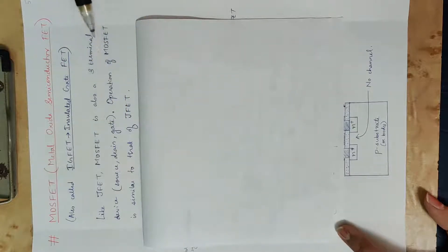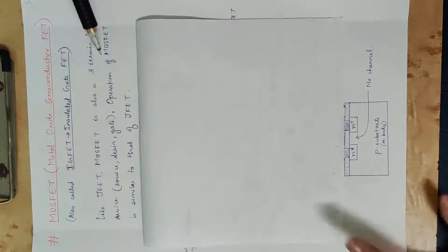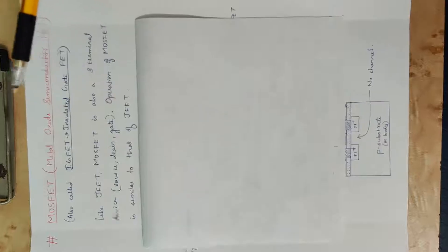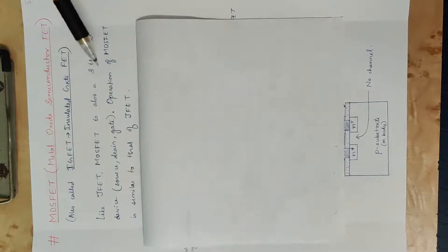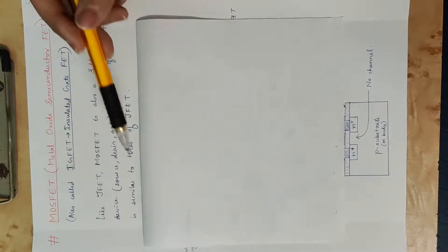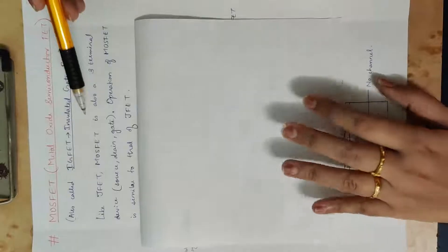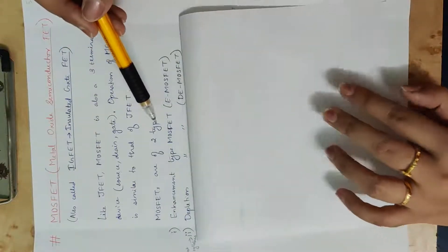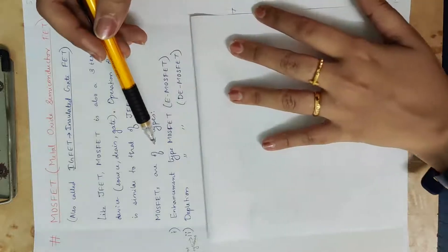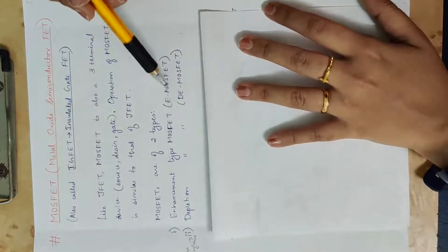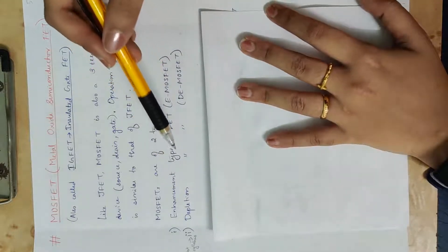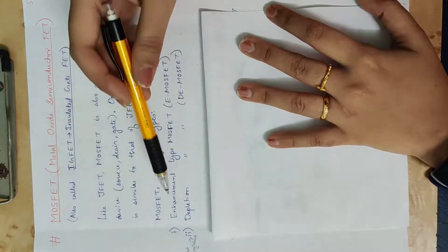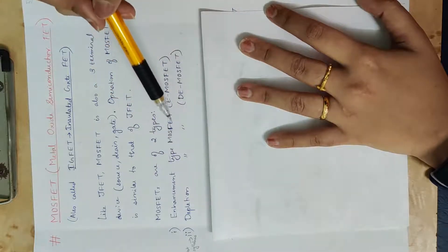MOSFET is a 3-terminal device and its operation is similar to that of JFET. MOSFETs are of two types: Enhancement Type MOSFET (E-MOSFET) and Depletion Type MOSFET (DE-MOSFET).